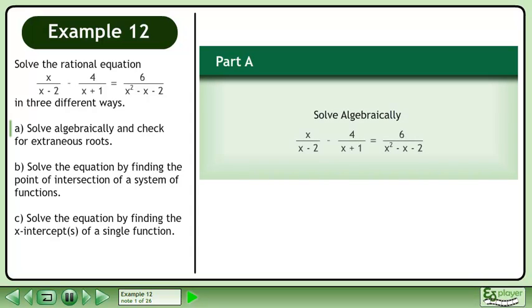Solve the rational equation x over x minus 2 minus 4 over x plus 1 equals 6 over x squared minus x minus 2 in three different ways. In part A, solve algebraically and check for extraneous roots.